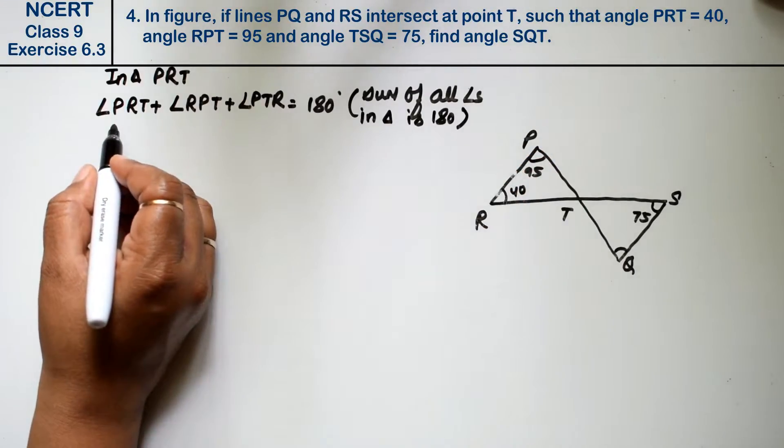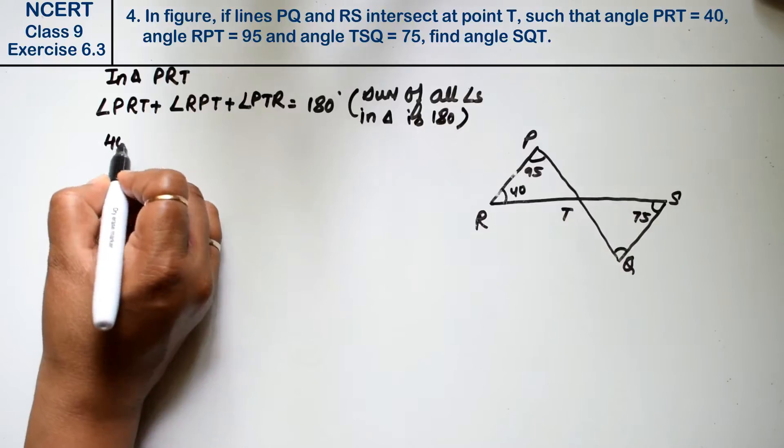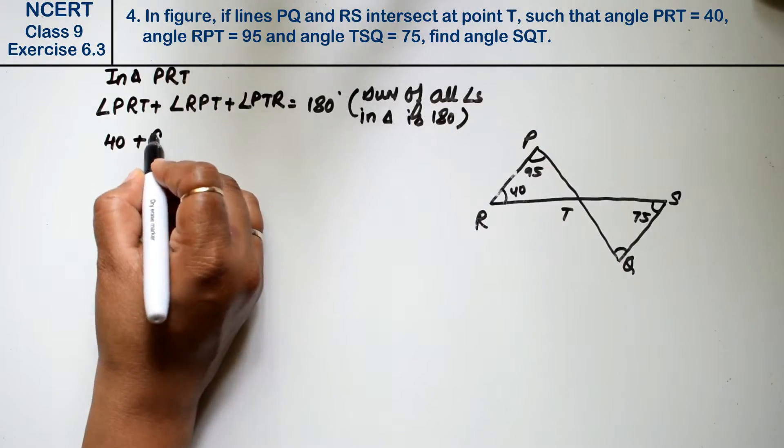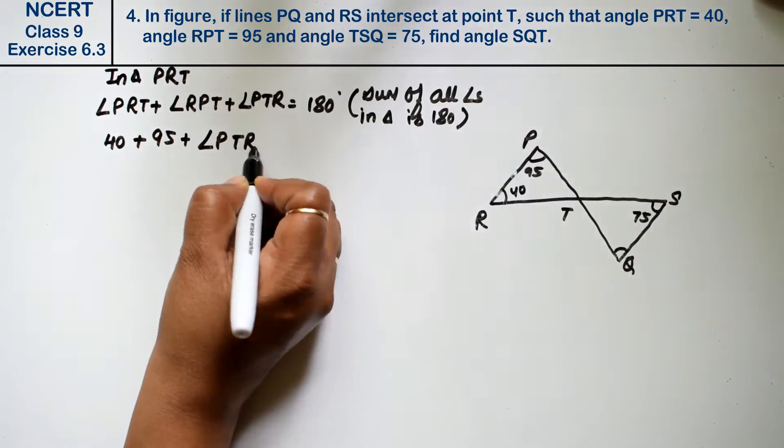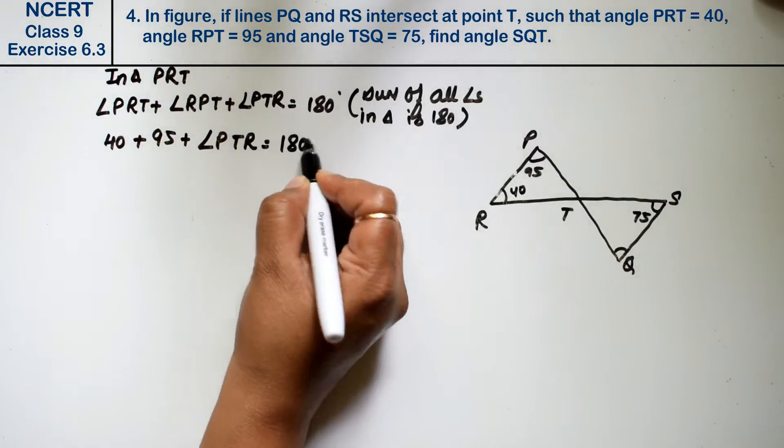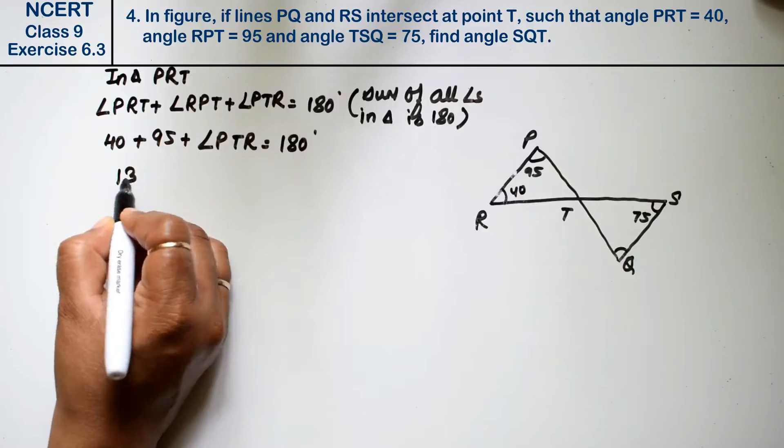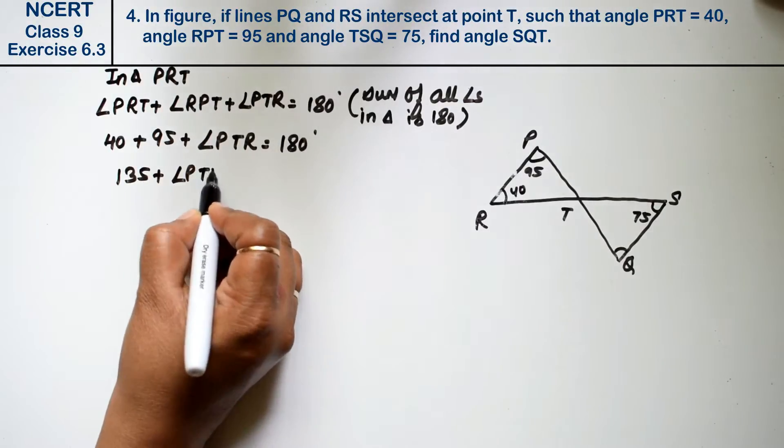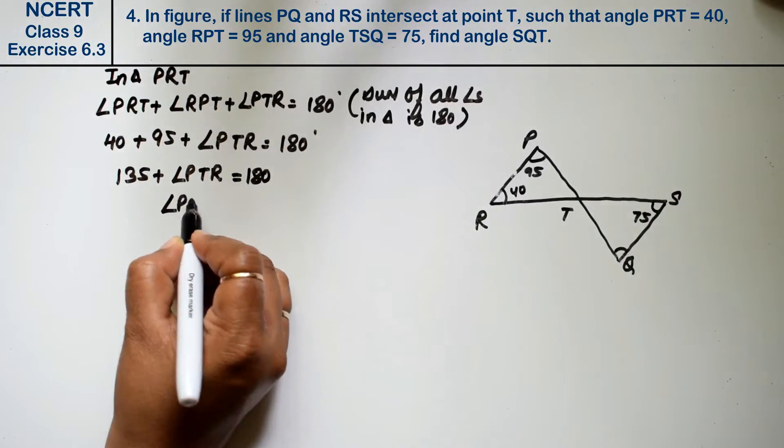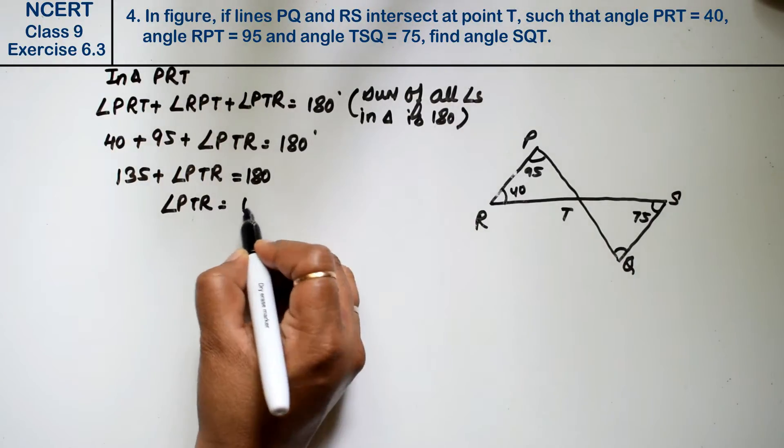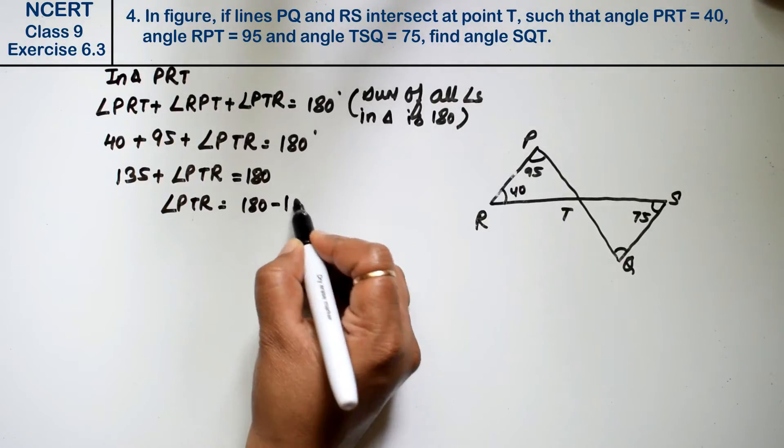Right. So angle PRT is 40, angle RPT is 95 plus angle PTR equals 180. So 135 plus angle PTR equals 180. Therefore, angle PTR is 180 minus 135.